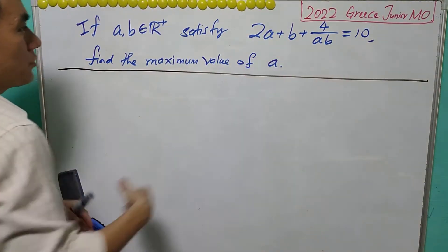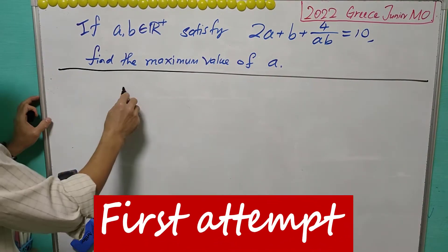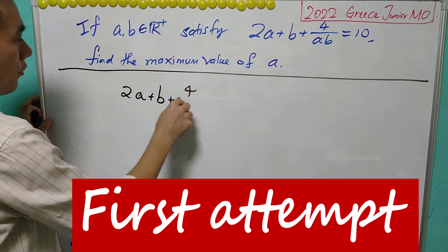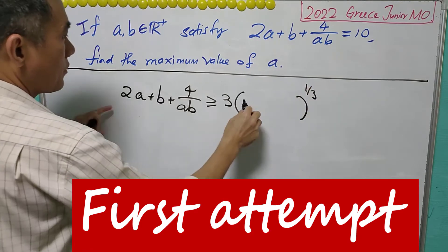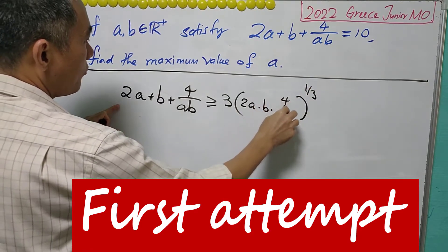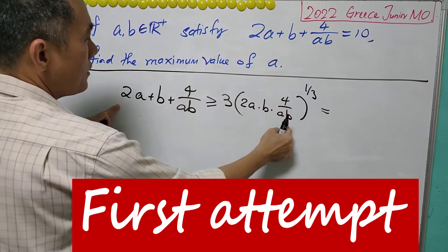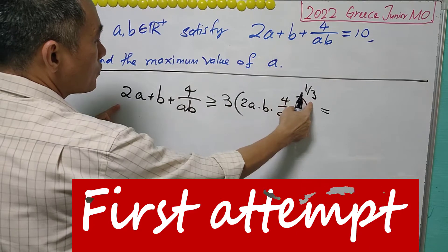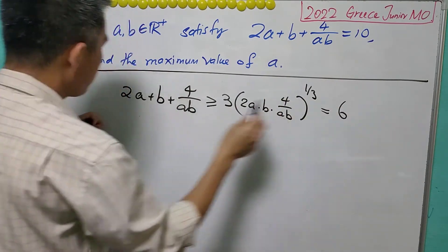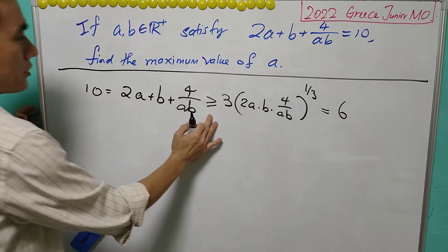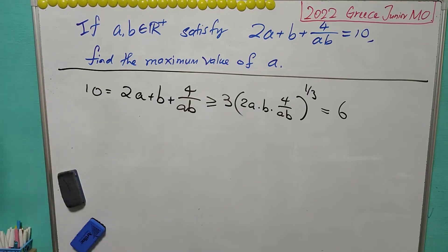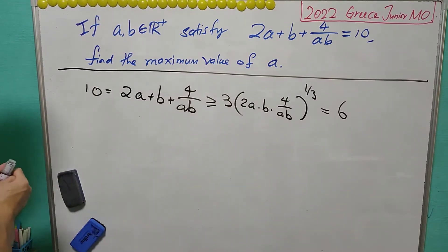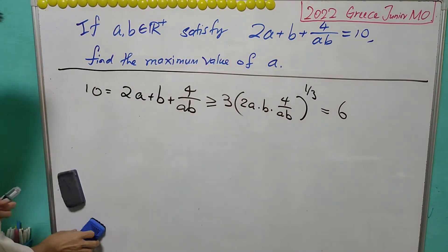Now if we use the AM-GM inequality directly, we will see that 2A plus B plus 4 over AB is greater than or equal to 3 times the cube root of the product. The product of 2A, B, and 4 over AB gives us 8, and the cube root of 8 is 2, so 2 times 3 is 6. What we have is 10 is greater than or equal to 6 — that's alright, but it doesn't help us find the value of A satisfying the equation. This first attempt is not good, so let me erase it.